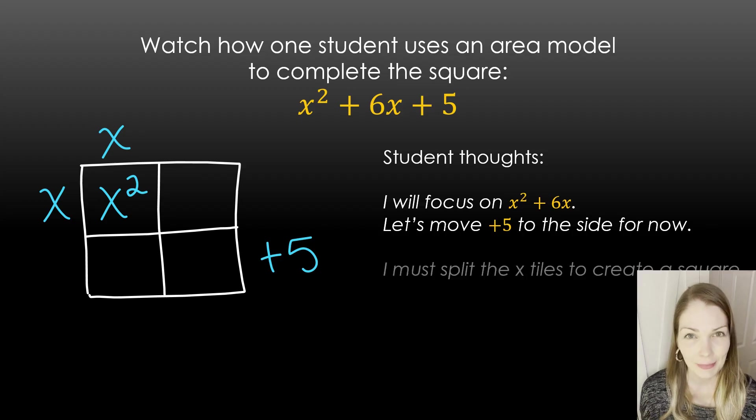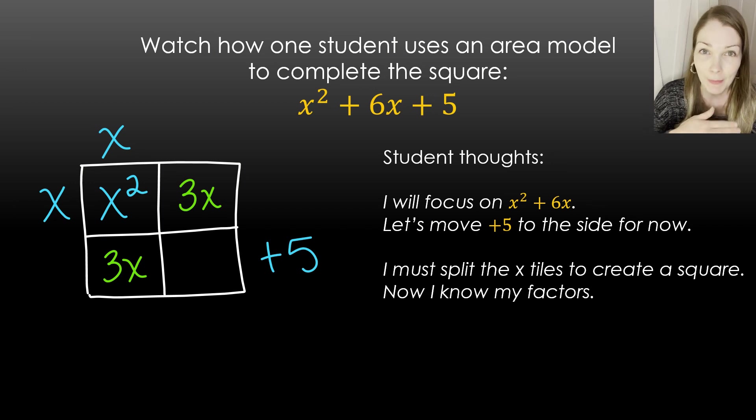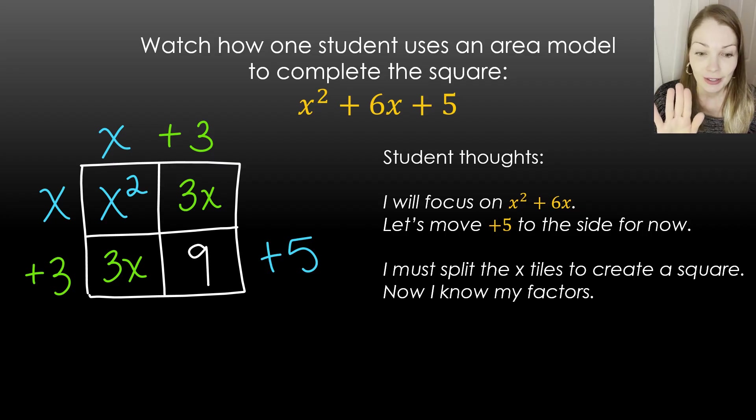And then the x tiles. If we're going to make a square, what do we have to do with those? The only way you're going to make a square is if it's the same length and width, same height and width that you're working with. So the only way we're going to be able to complete the square is to take our x tiles and put half one way and half the other. Same thing in this area model. You're just going to take whatever is in the spot of B, whatever's in that middle term, and split it in half.